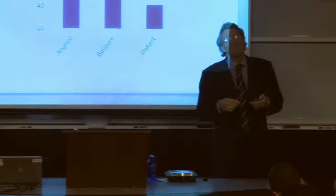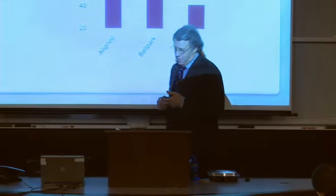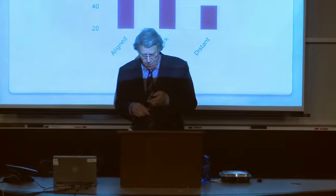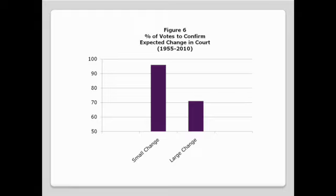Further investigation led me to discover a fourth factor. As revealed in Figure 6, senators care about the impact of the appointment on the existing makeup of the court. Even a highly ideological nominee like Scalia or Brennan is likely to be approved without much fuss if the confirmation is not expected to change the ideological makeup of the court. As a general rule, conservatives won't go to the mat to defeat a liberal who replaces a liberal, and liberals generally won't go to the mat to defeat a conservative who replaces a conservative. It's when a conservative is nominated to replace a liberal, or a liberal is nominated to replace a conservative, that things really light up.